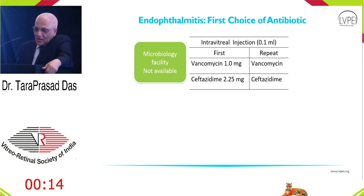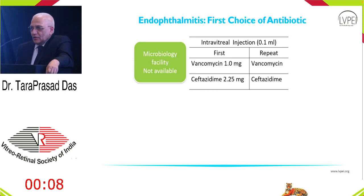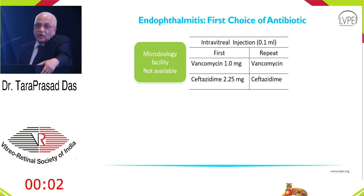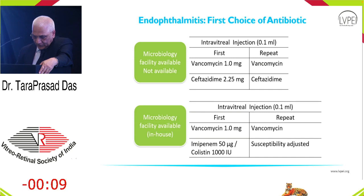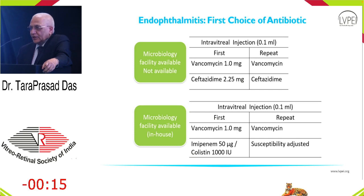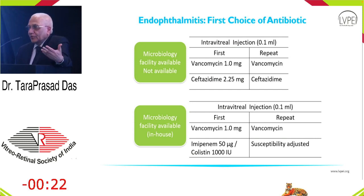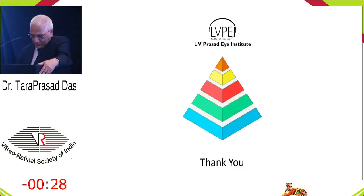The key question: what is your first choice of antibiotic without a proper microbiology facility? Go by evidence — inject vancomycin and ceftazidime, and repeat by clinical schedule with the same drug, because no better evidence is available until our final data is published. If you have a good microbiology facility, consider imipenem or colistin instead of ceftazidime based on local data over hundreds of patients. And if culture and susceptibility testing is available, always go by culture-susceptibility rather than empiric treatment.